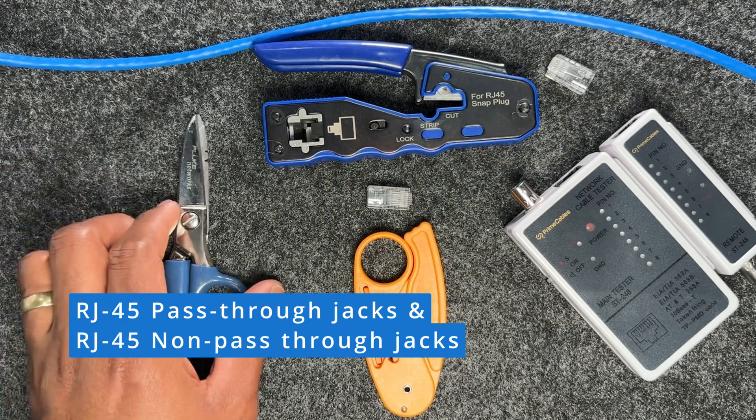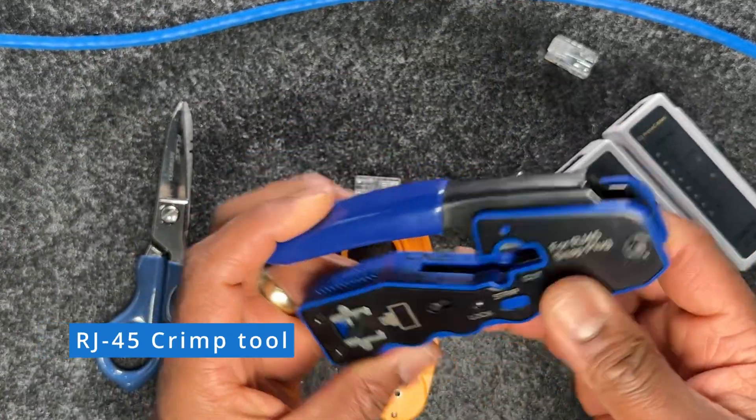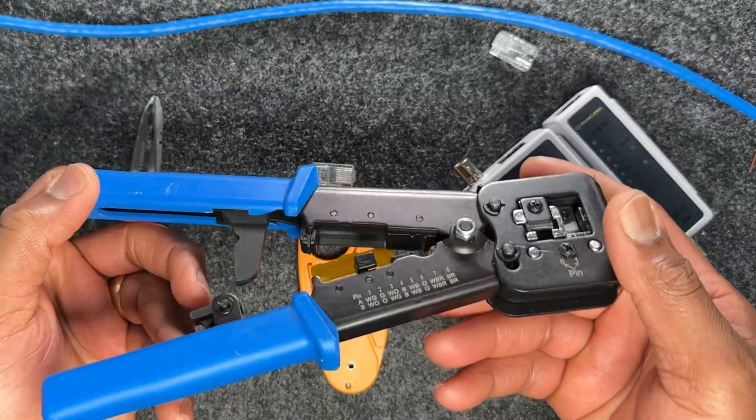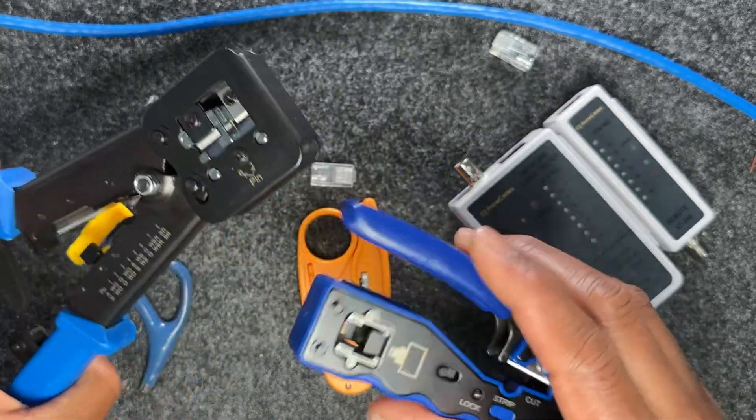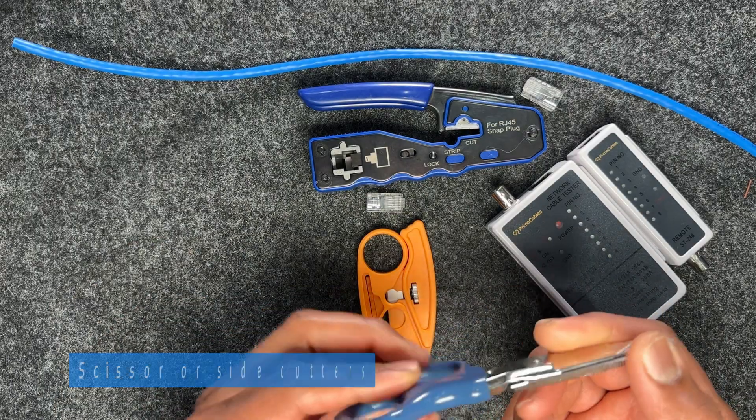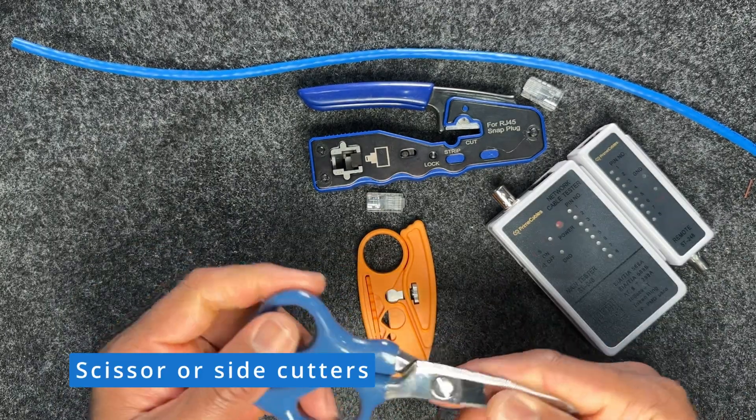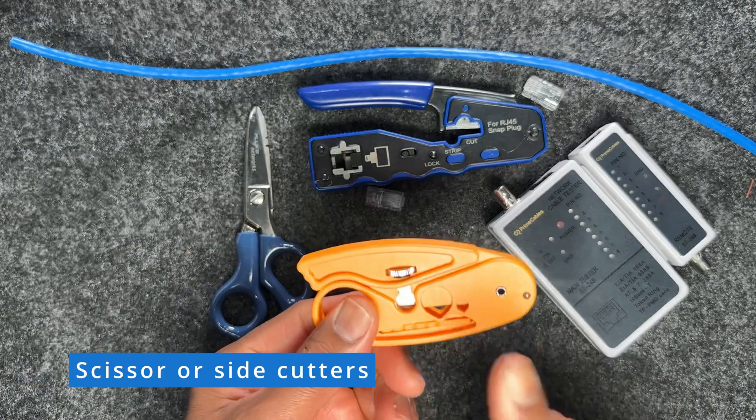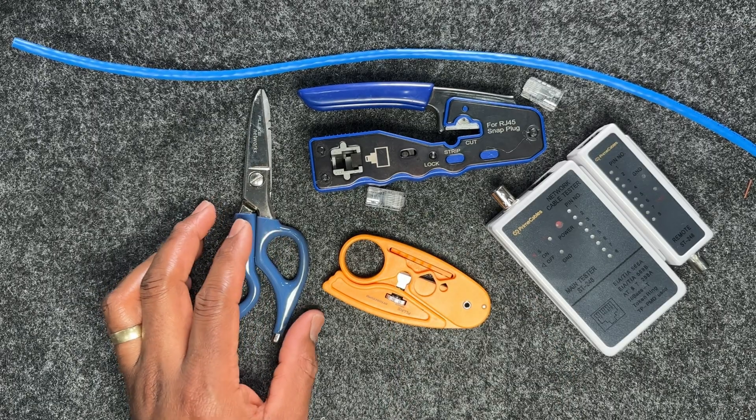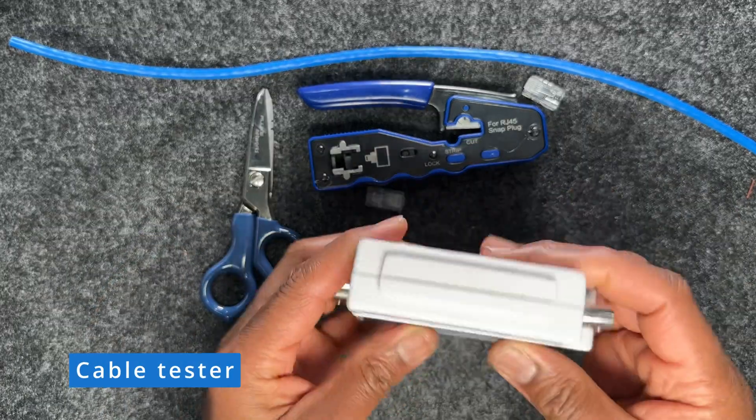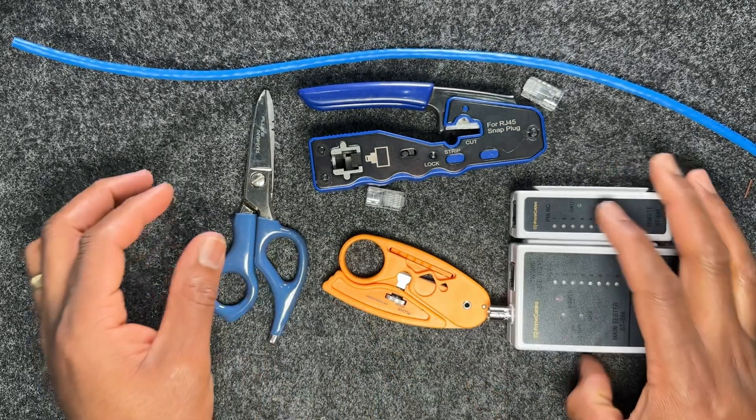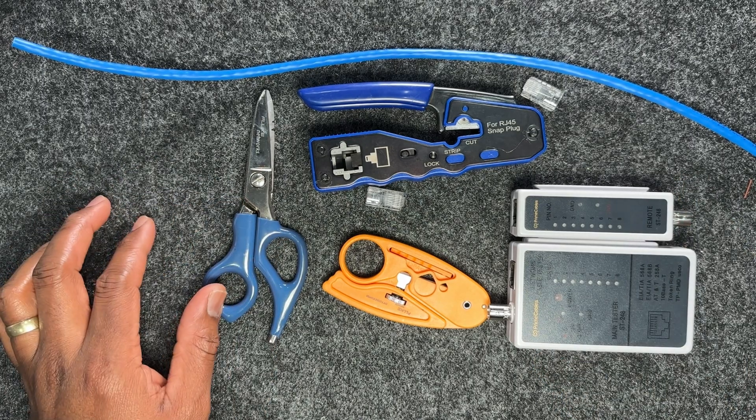We need the RJ45 crimp tool. Today we're using this one, though we've also used crimps like this in other videos. We also need our electrician scissors or lineman scissors for stripping, or the cable stripper that comes in the toolkit. Finally, we need a cable tester. We're using this simple wire map tester to verify the pinout.